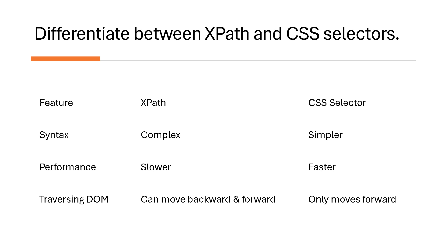After that opening line, give the exact answer. If I talk about syntax — XPath syntax is usually complex, but CSS selector syntax is quite simpler. If I talk about performance — XPath is quite slower, but CSS selectors are much faster than XPath. An important point to mention is DOM traversal: in XPath, we can move backward as well as forward, but with CSS selectors, it only moves in one direction — the forward direction.